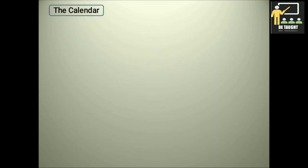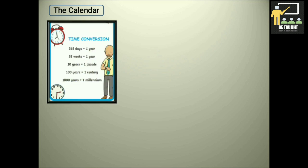Now we shall learn about the calendar. Time conversion. 365 days is equal to 1 year. 52 weeks is equal to 1 year. 10 years is equal to 1 decade. 100 years is equal to 1 century, and 1000 years is equal to 1 millennium.